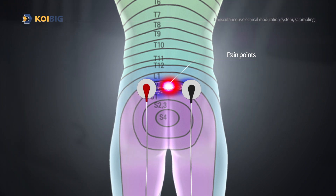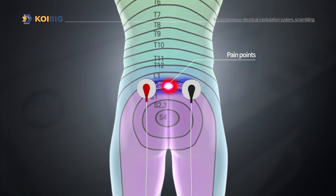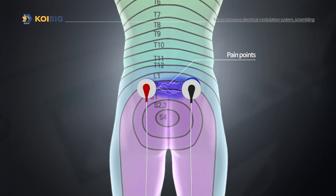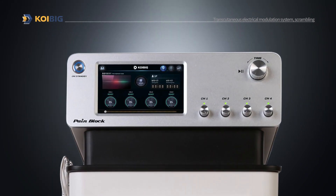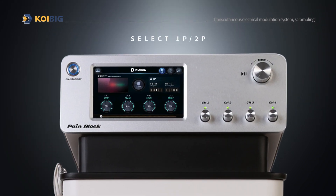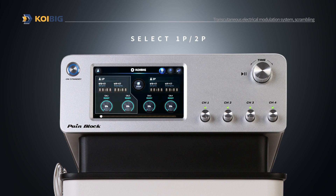Attach the electrodes along the dermatome line on both sides of the most painful points and treat by adjusting the stimulus intensity. Up to four channels can be used at the same time in PainBlock, and the settings can be changed for each area in two-person mode.